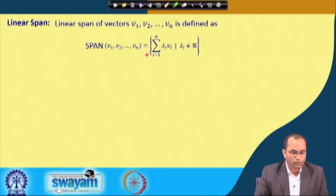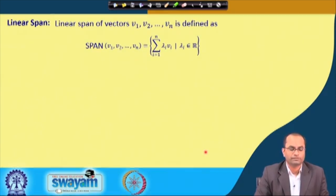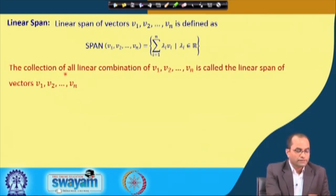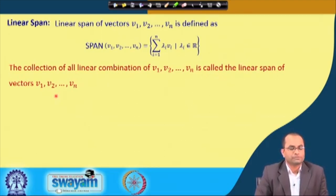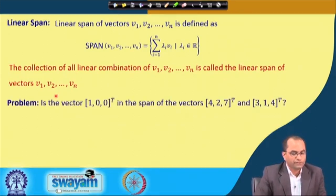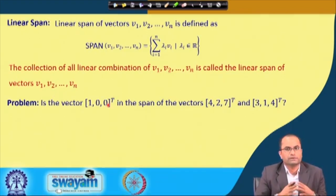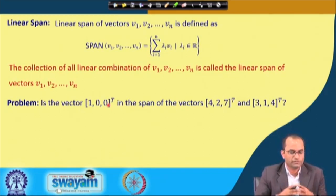The collection of all linear combinations of the given vectors v₁, v₂, …, vₙ is called the linear span of those vectors. Now the problem we will discuss is: is the vector [1, 0, 0]ᵀ — written as a column vector, though we can also work with row vectors — in the span of [4, 2, 7] and [3, 1, 4]?